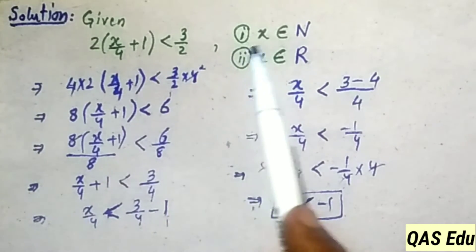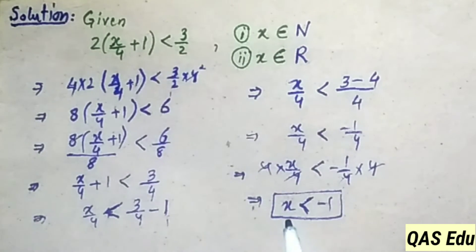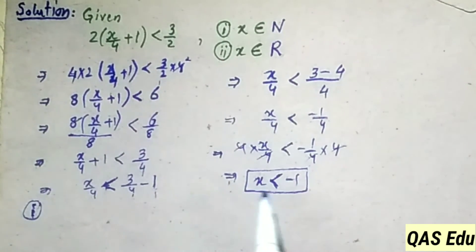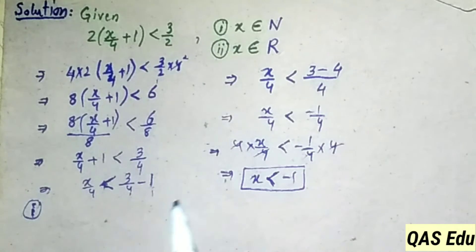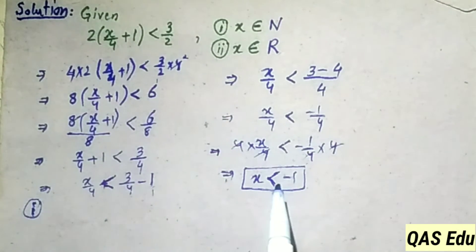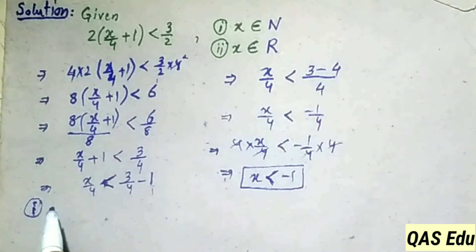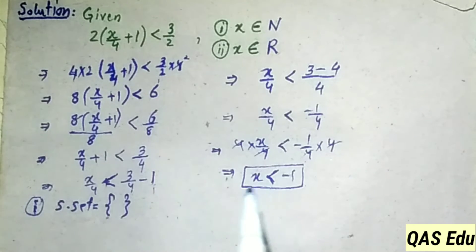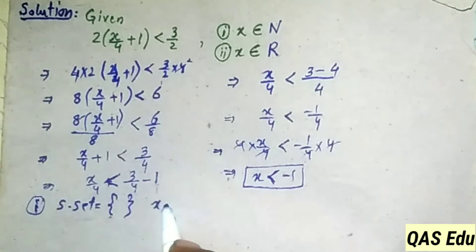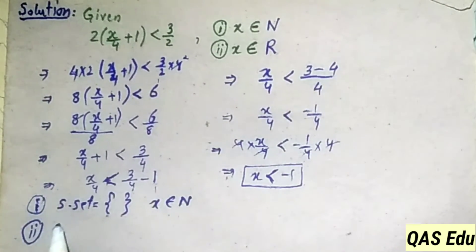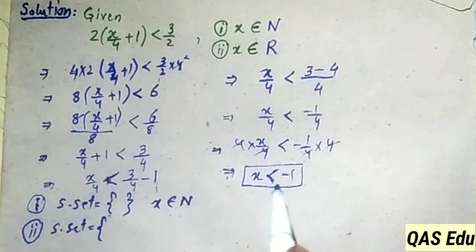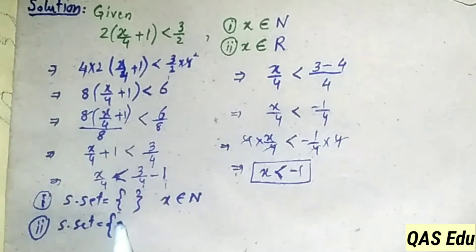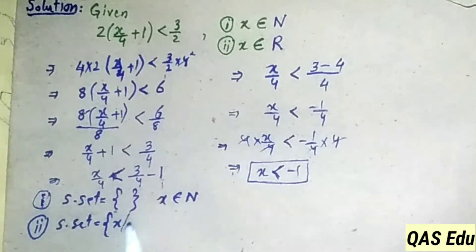Now we apply the two conditions. For x belonging to natural numbers: since x must be less than minus 1, there are no natural numbers less than minus 1 (natural numbers are positive: 1, 2, 3...). So the solution set for natural numbers is the empty set. For x belonging to real numbers: all real numbers less than minus 1 satisfy the condition, so the solution set is x less than minus 1.